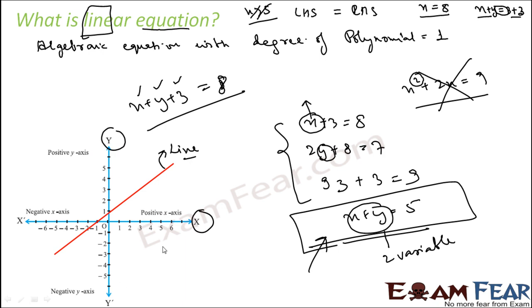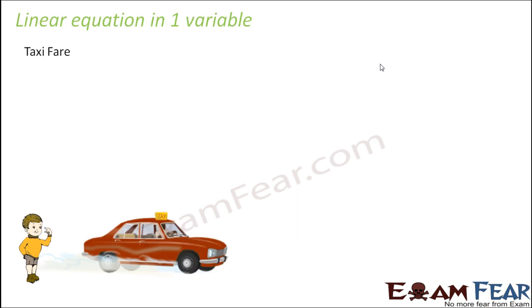By definition, a linear equation is an algebraic equation with an equal-to sign where the degree of polynomial is one. We have linear equations in one variable and in two variables. Linear equation in one variable is something we've already studied, but we'll review it and look at real examples to understand why we study linear equations and what their application is in day-to-day life.